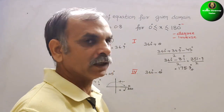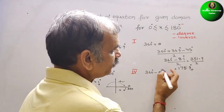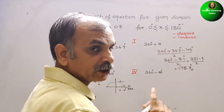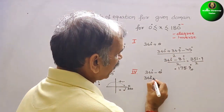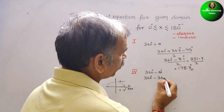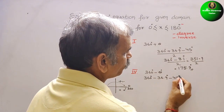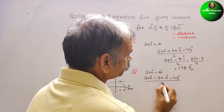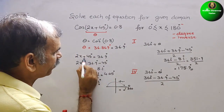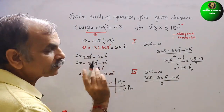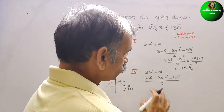Now for the second solution, using 360° − θ: 2x + 45° = 360° − 36.9°. We always carry the −45° to this side because it was +45 on the left, so it becomes minus. So we have 2x = 360° − 36.9° − 45° divided by 2.